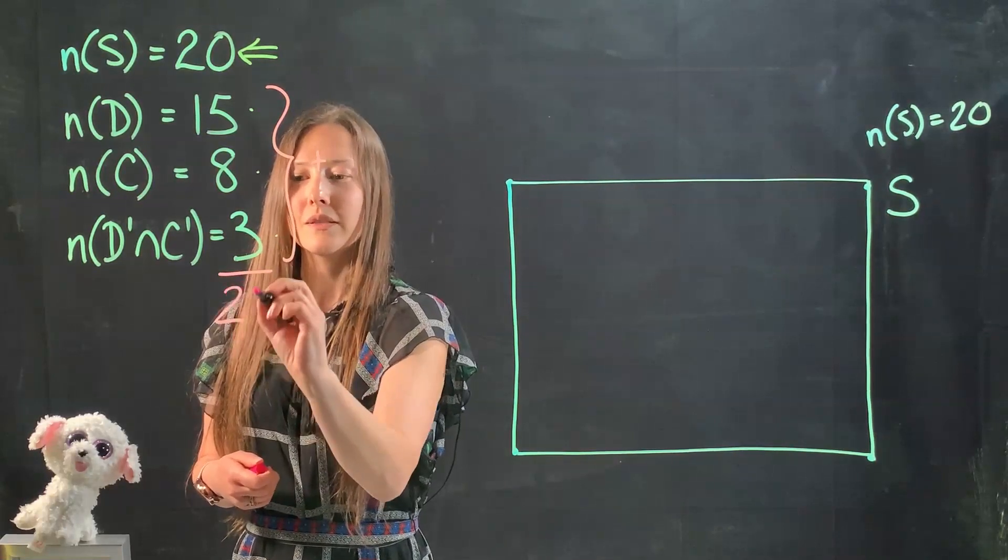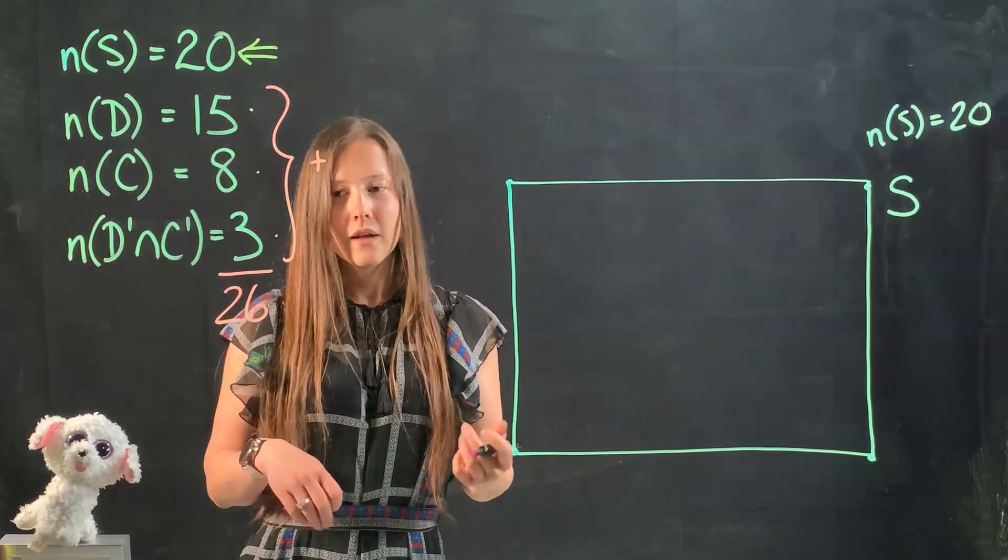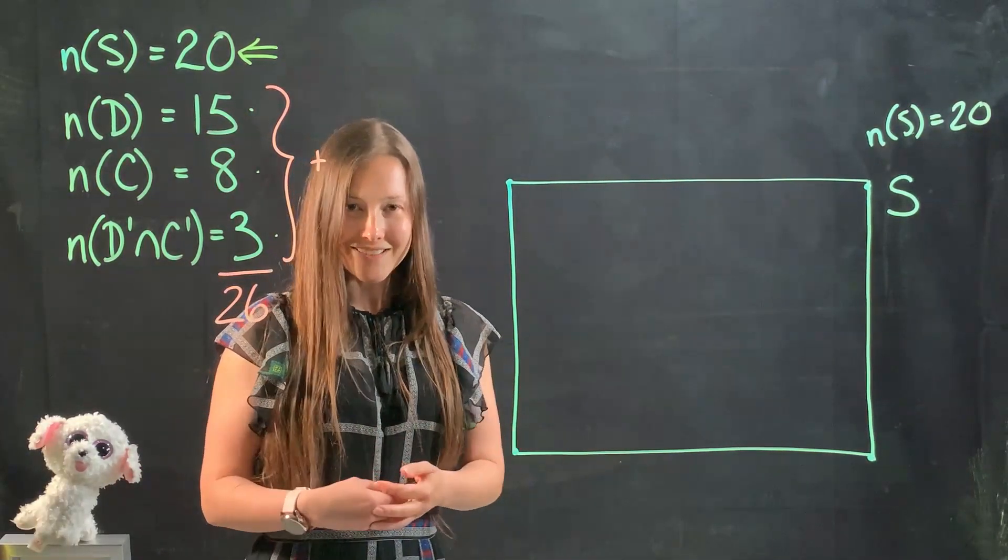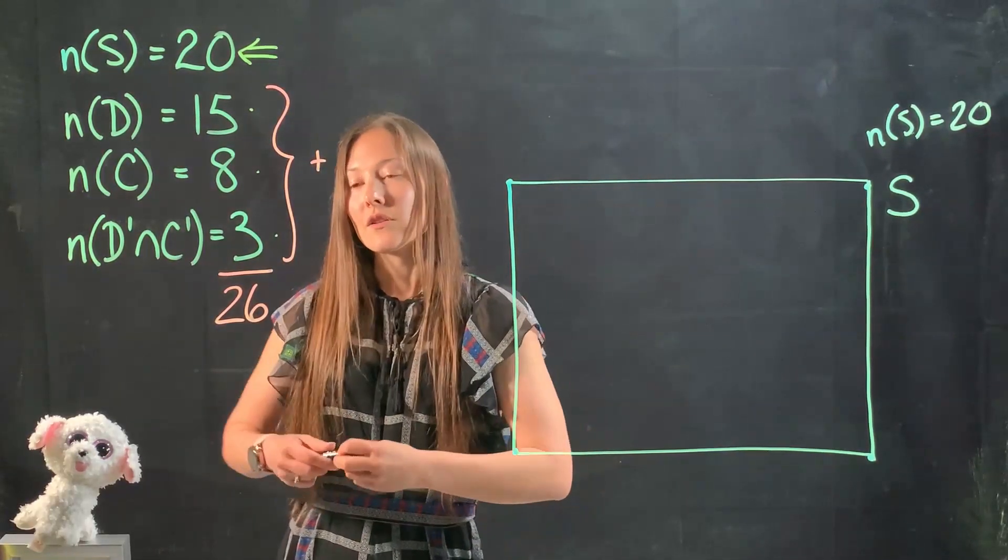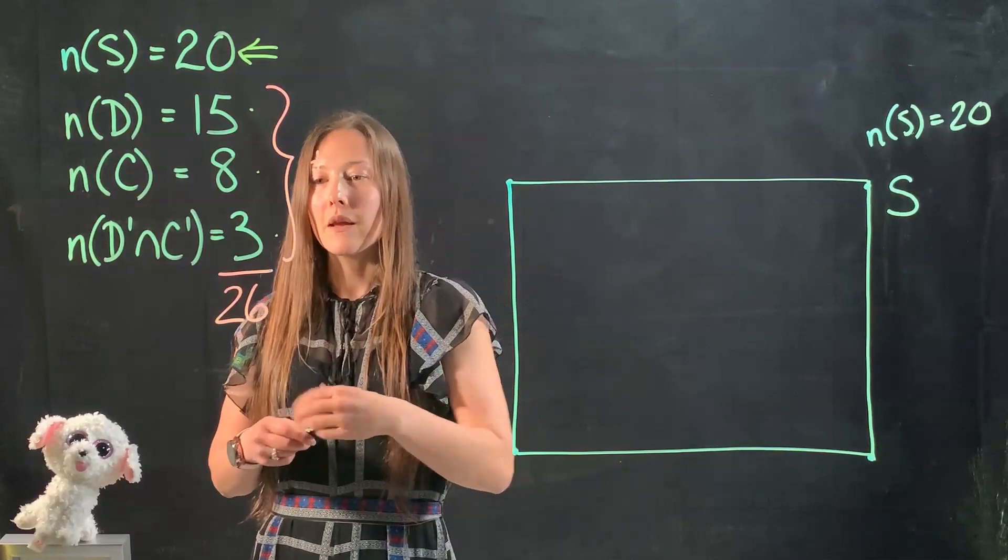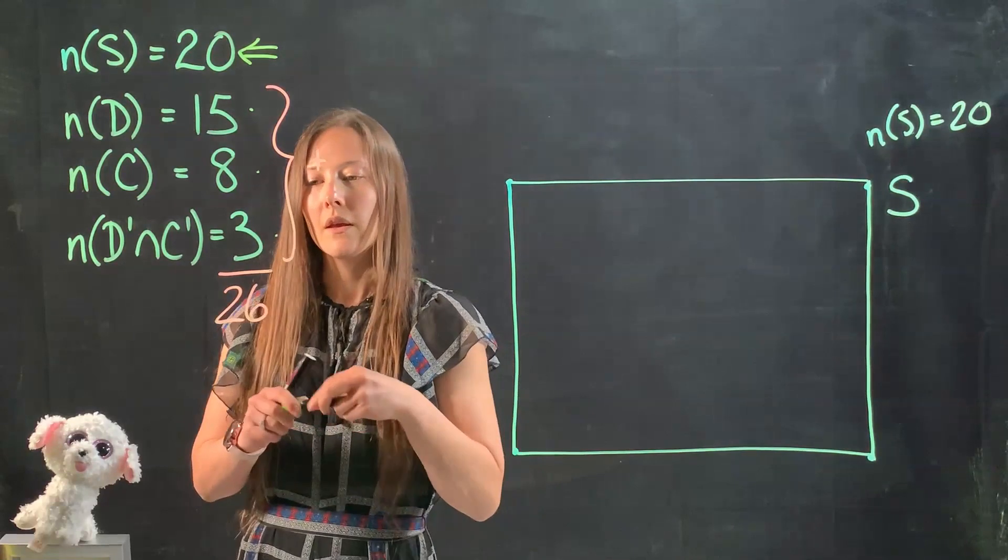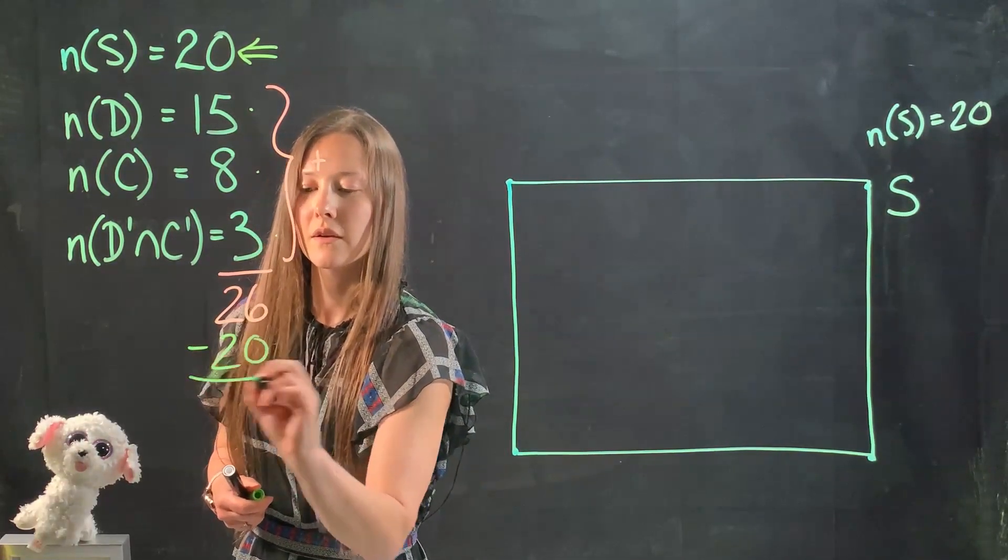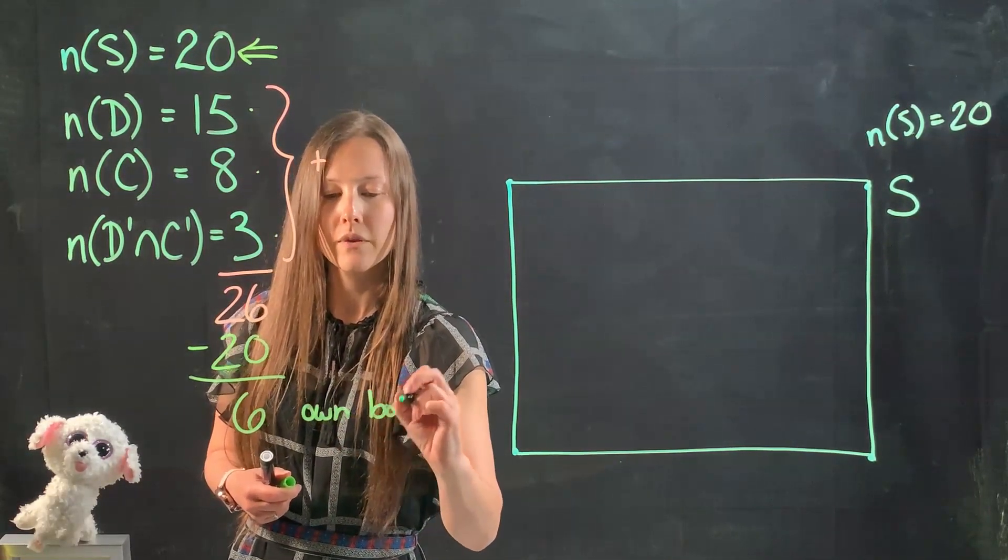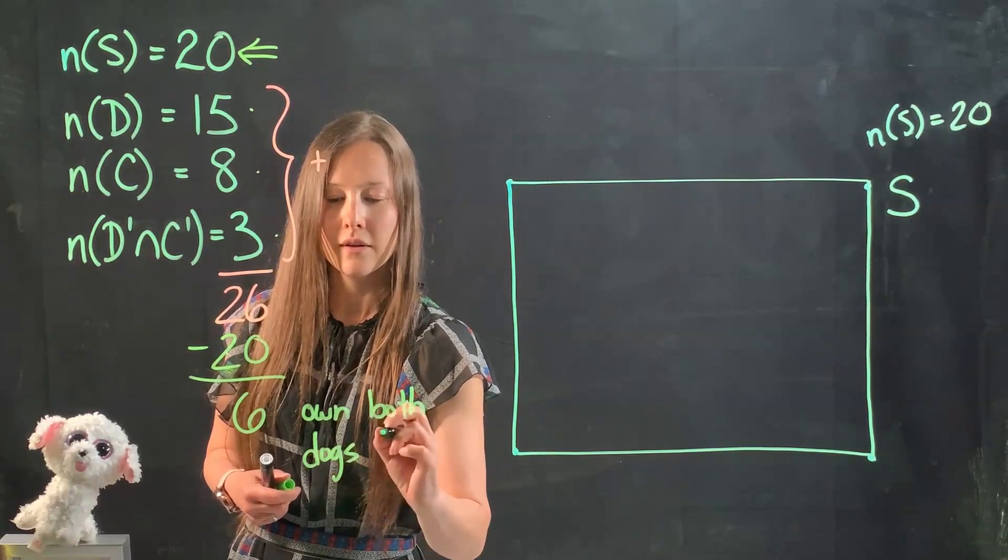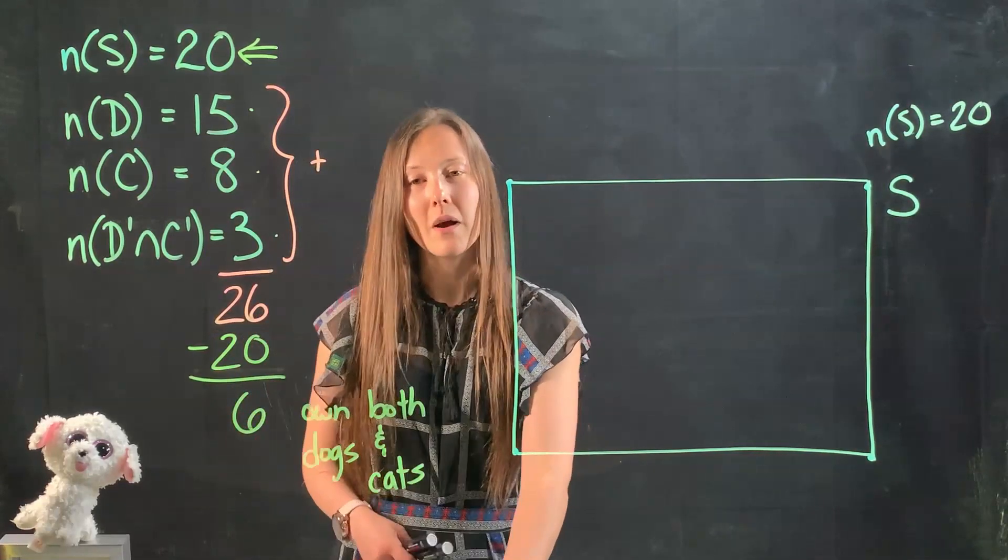When we add those up, we are getting 26. So you might think, how's that possible? We're supposed to have 20. What that means is we actually have intersecting sets. That means we have some people who own both dogs and cats. The difference between what we are getting when we get that total and what we're supposed to be getting is what belongs in our intersection. So this means that 6 people own both dogs and cats.